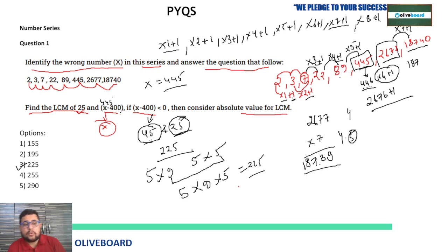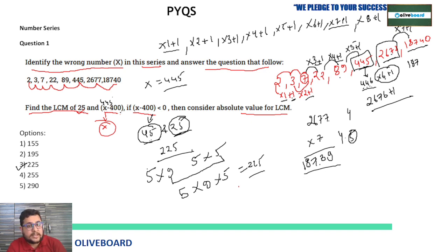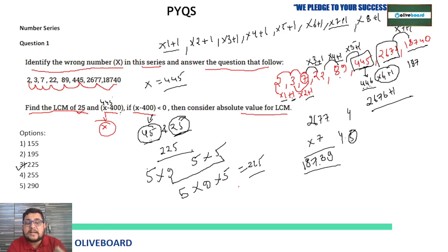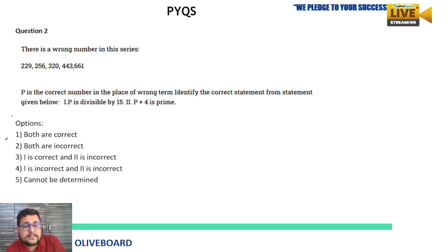So the answer is 225, which is available in the options. They are not asking any rocket science — first find the wrong number in the series, then solve accordingly. The extra detail they provide requires you to first identify the wrong number before computing the final answer. That is the kind of question coming in the RBI Grade B paper.